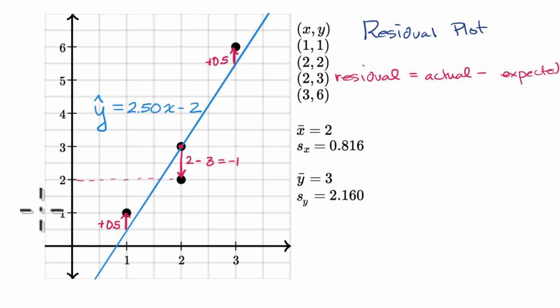So those are the residuals, but how do we plot it? Well, we would set up our axes. Let me do it right over here. One, two, and three. And let's see, the maximum residual here is positive 0.5, and then the minimum one here is negative one.